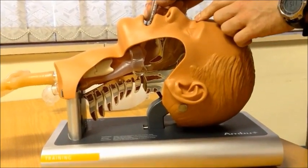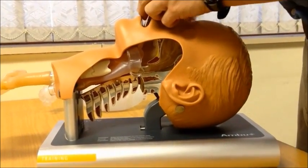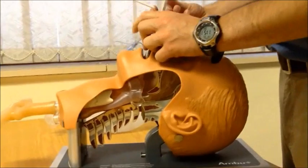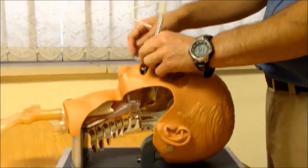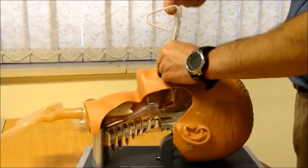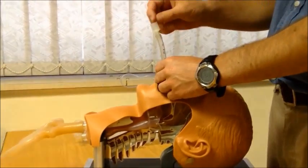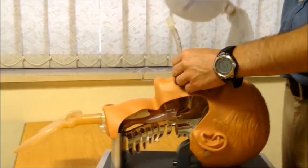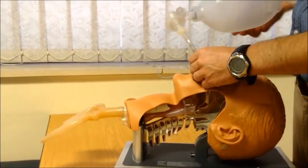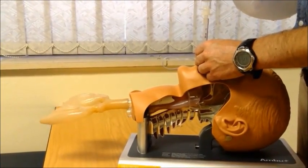Note the depth of insertion, in this case 22 cm at the teeth, and inflate your cuff. Remove and discard the syringe. Maintain secure grip of your ET tube and take out your stylet. Connect your CO2 detector device and after that your bag mask device and confirm correct placement and ventilation.